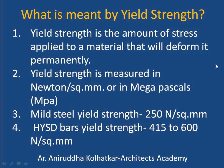Yield strength means the amount of stress applied to a material that will deform it permanently. When steel is subjected to stress it will deform, but when the stress is released it will come back to its original shape. However, beyond a certain point, if more stress is applied, the steel will permanently deform and not return to its original shape. This point — or the amount of stress applied — is called the yield strength of the steel.